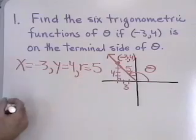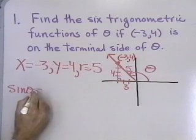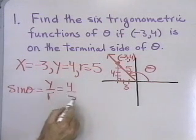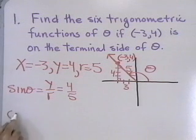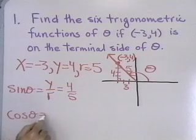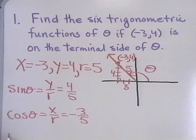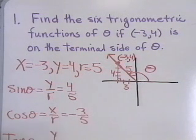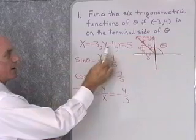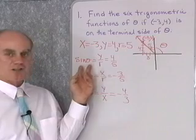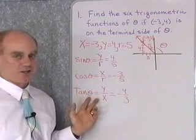The sine of θ equals y divided by r, which is 4 over 5. The cosine of θ is x divided by r, which is -3 over 5, so negative 3 fifths. The tangent of θ is y divided by x, which is 4 divided by -3, so negative 4 thirds. Here are my first three trigonometric functions: sine θ, cosine θ, and tangent θ.